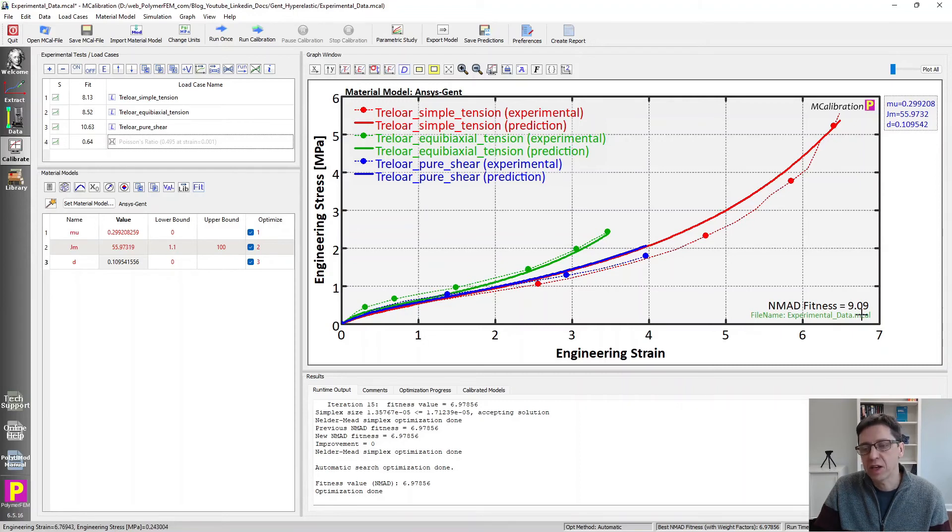So overall, relatively good. It's a 9% error. It captures all the different loading modes reasonably well, but it's not perfect. It's a simple material model with a simple energy function. So it doesn't capture it as well as the extended tube model, for example. But it's a good safe model to use. I like it for that particular reason.